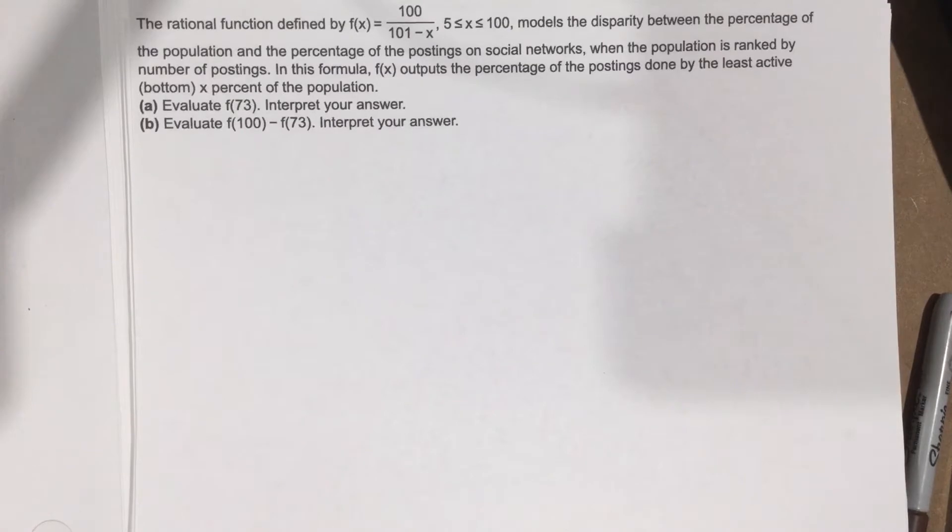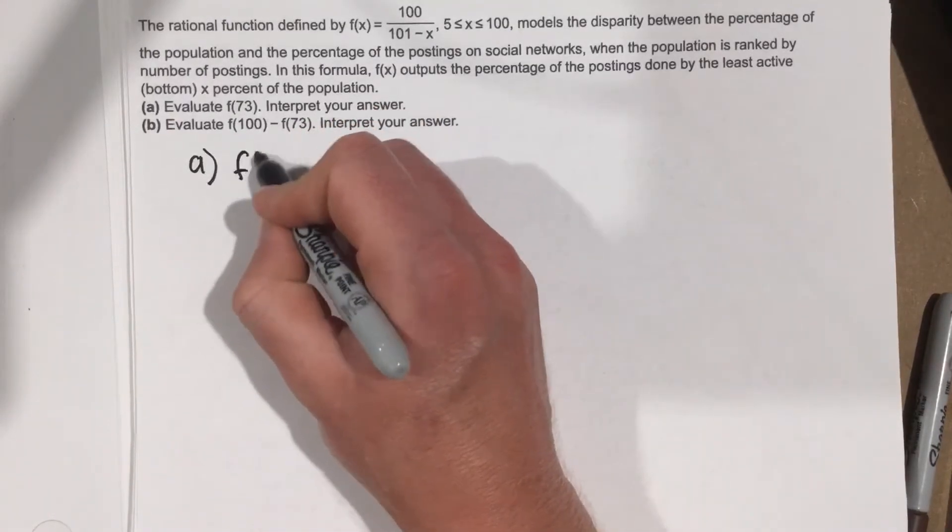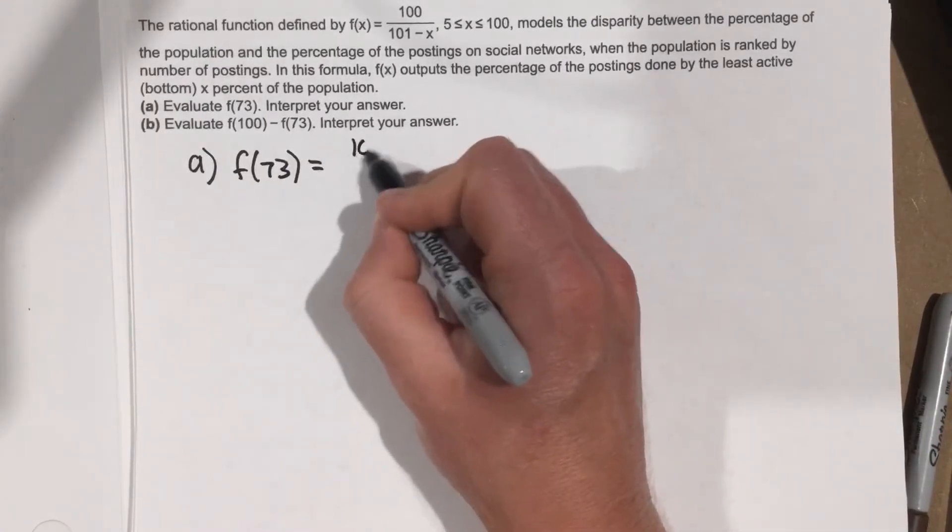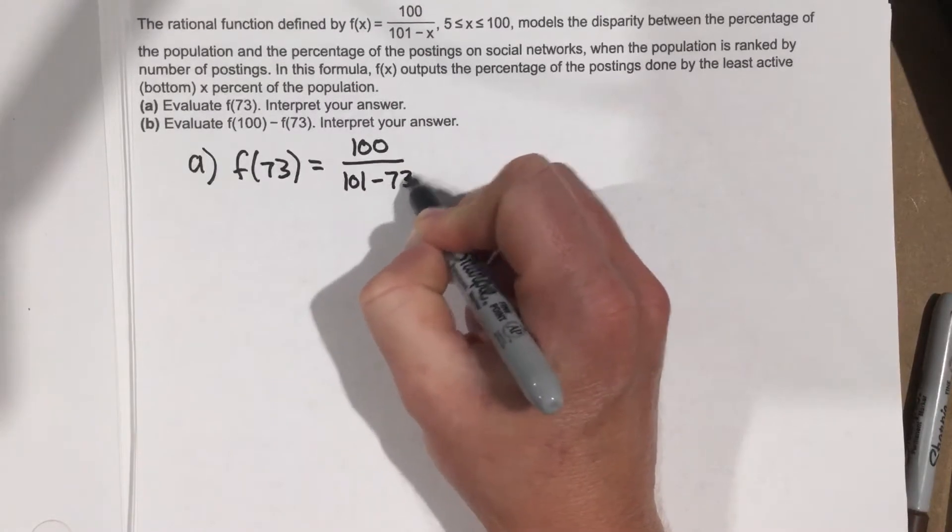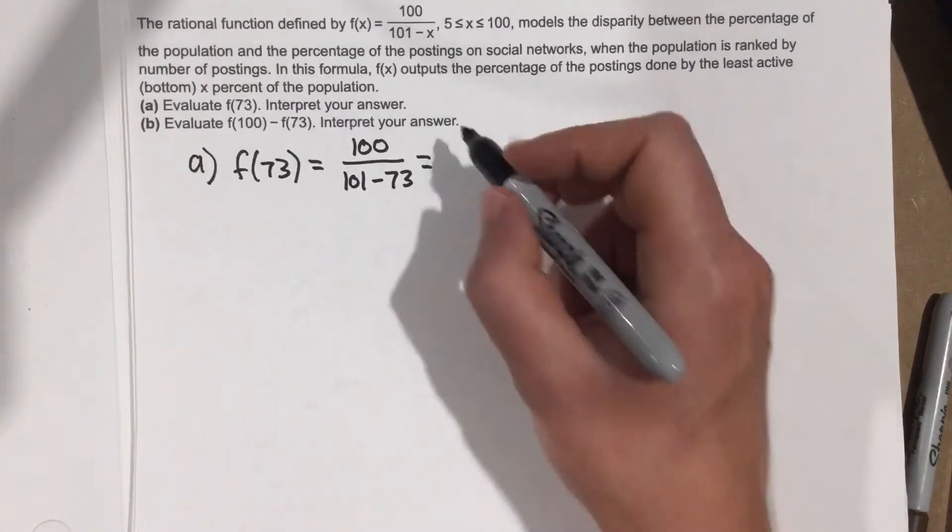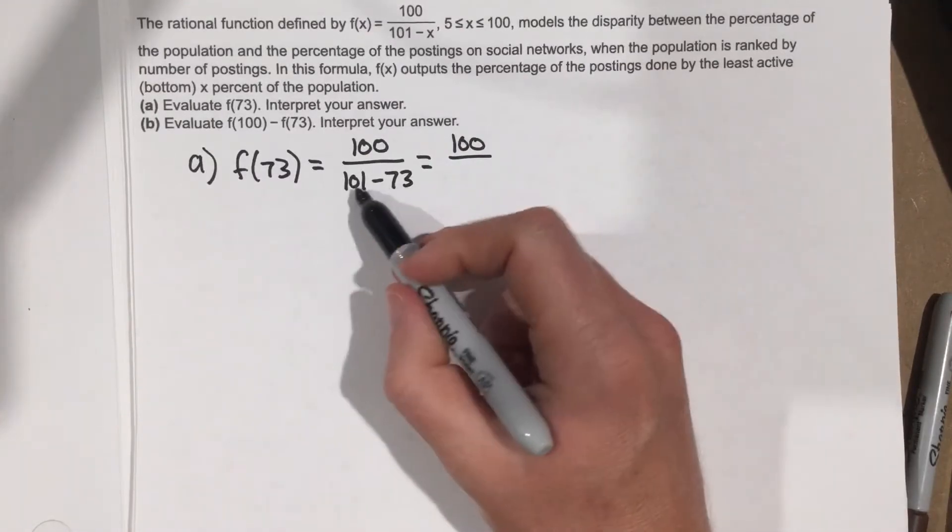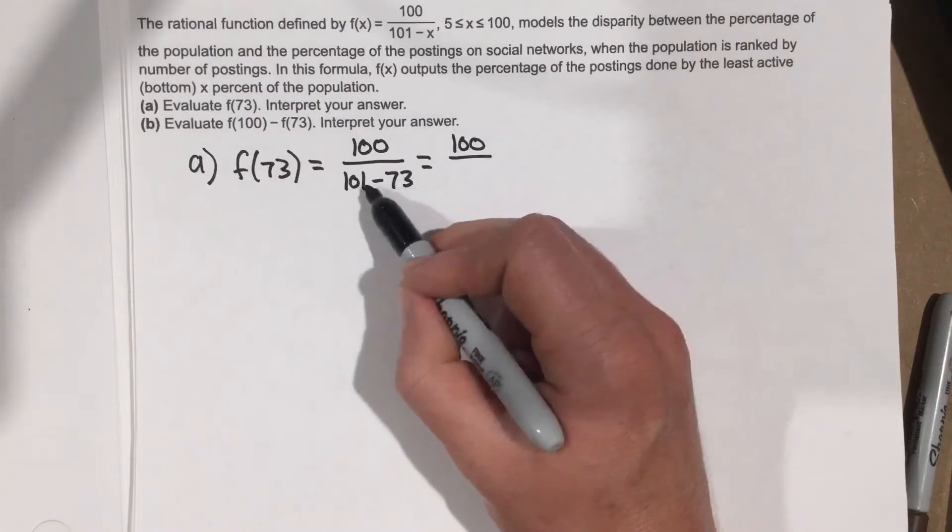Part A asks you to evaluate f(73). So f(73) equals 100 over 101 minus 73. I end up with 100 over 101 minus 73 gives you 28.